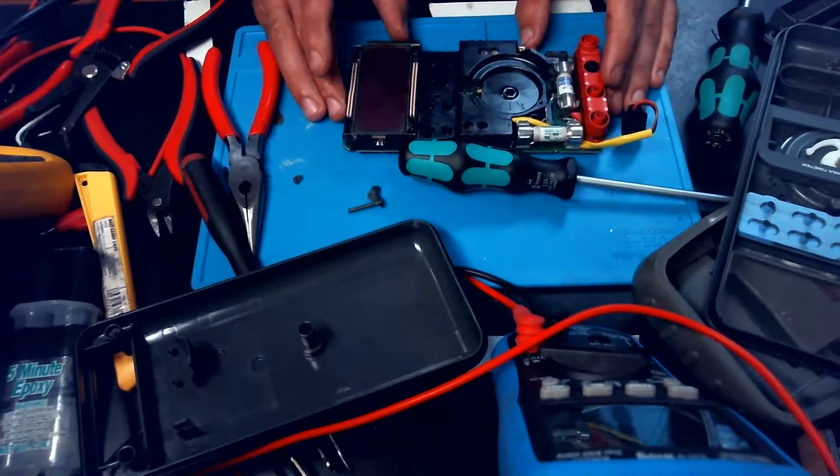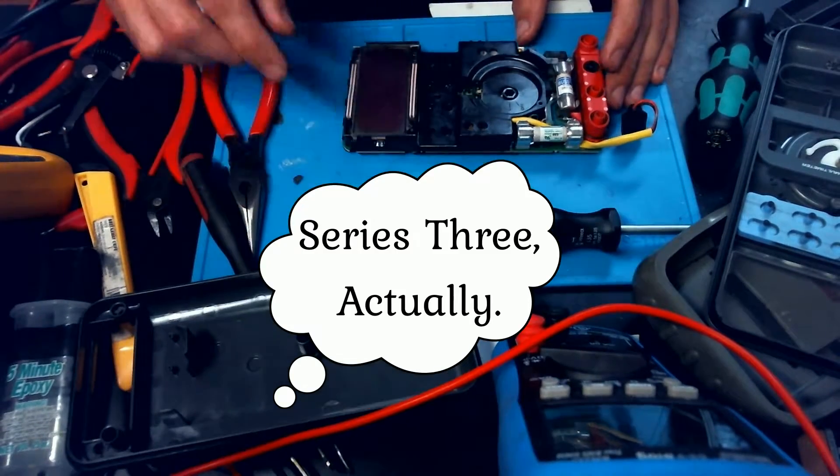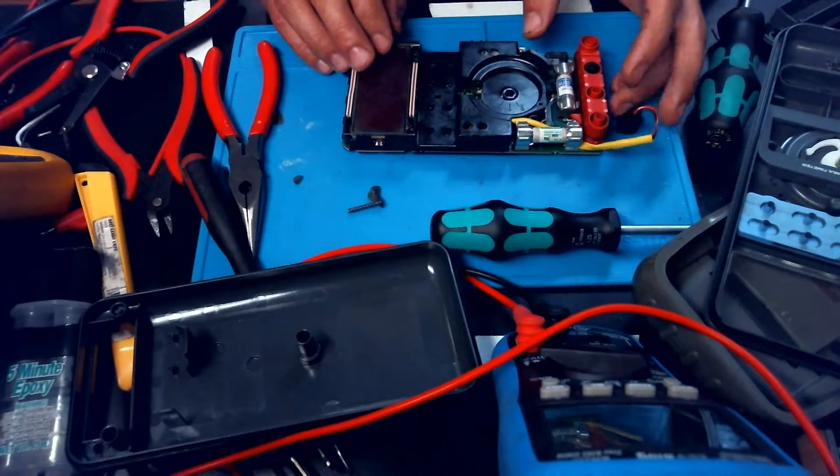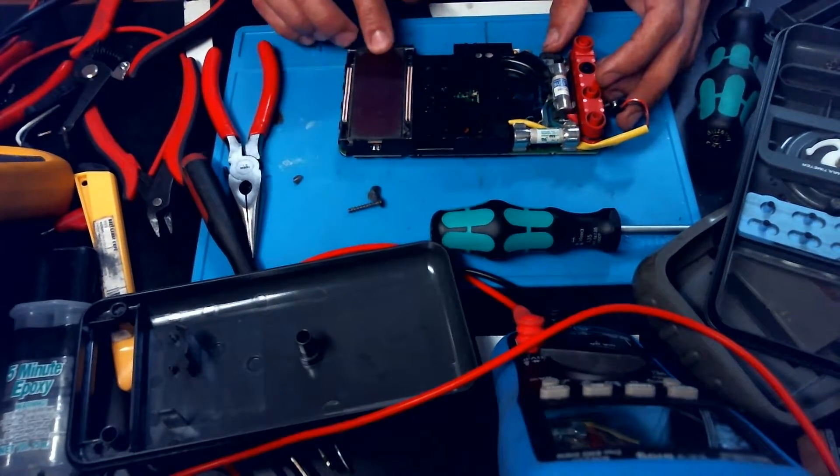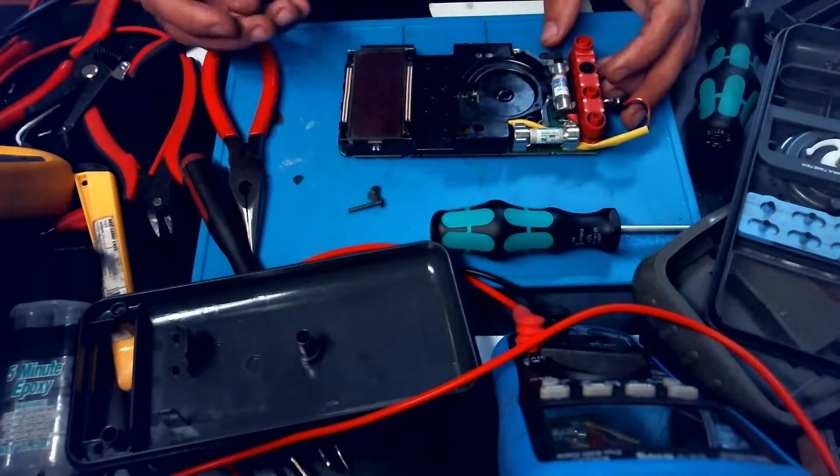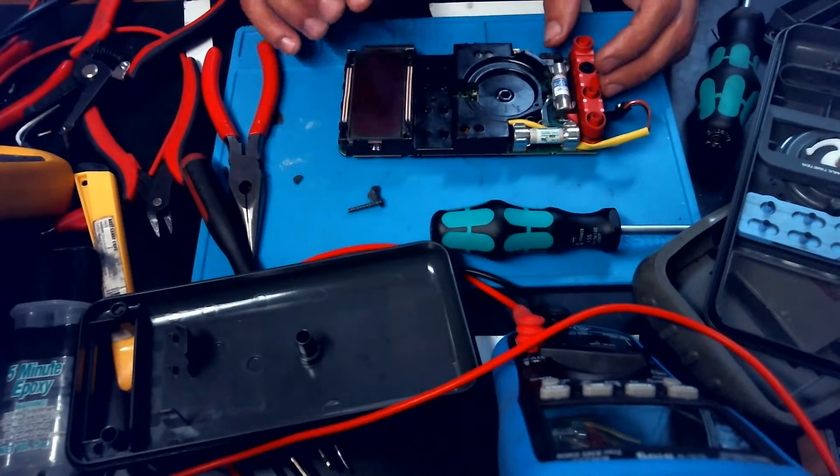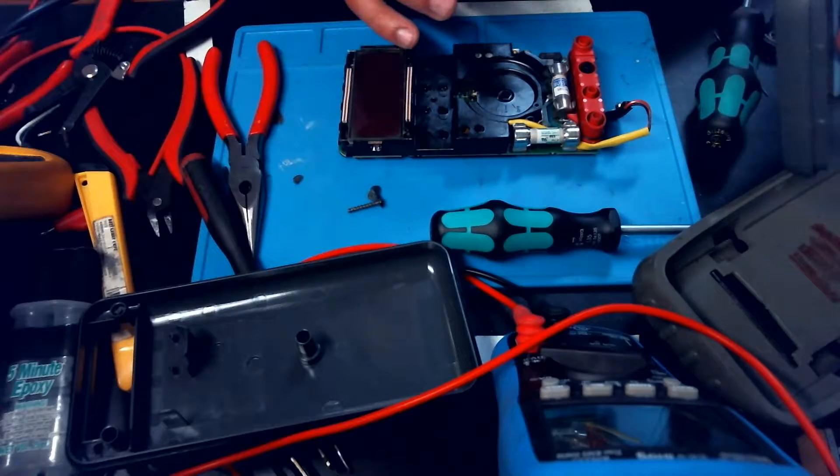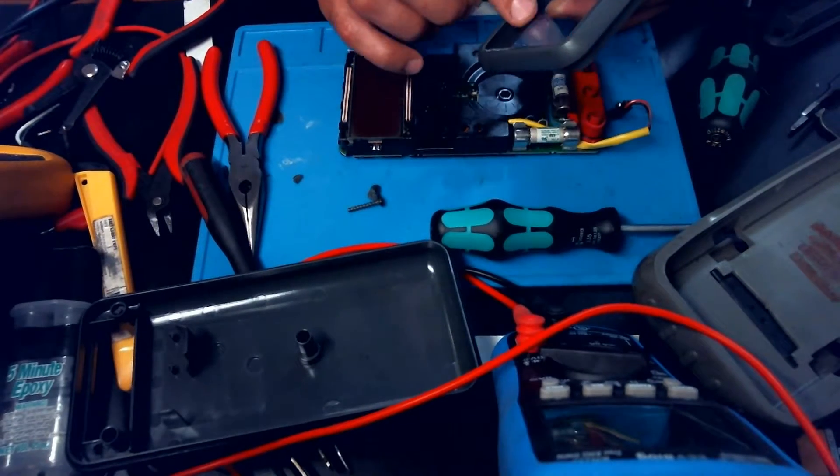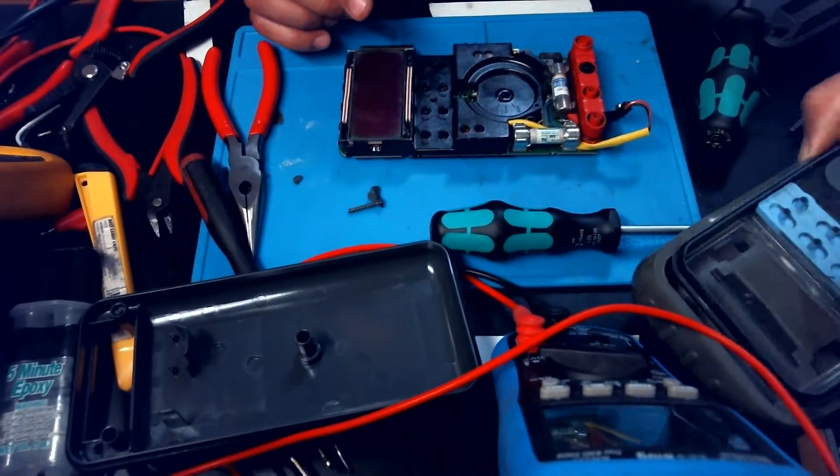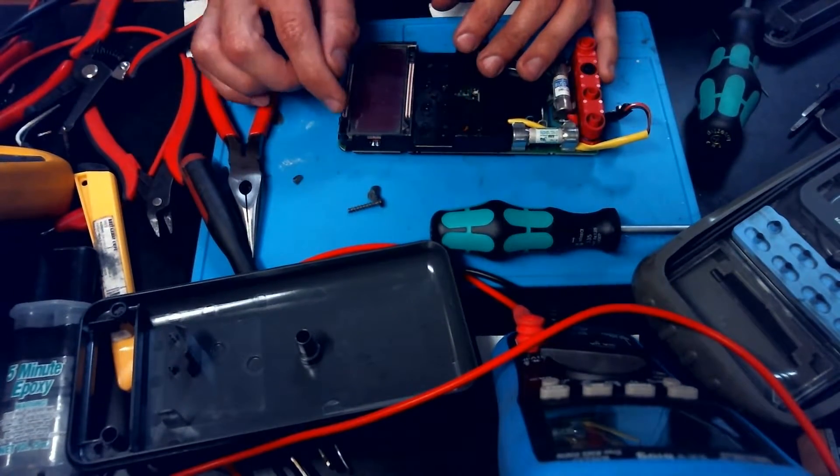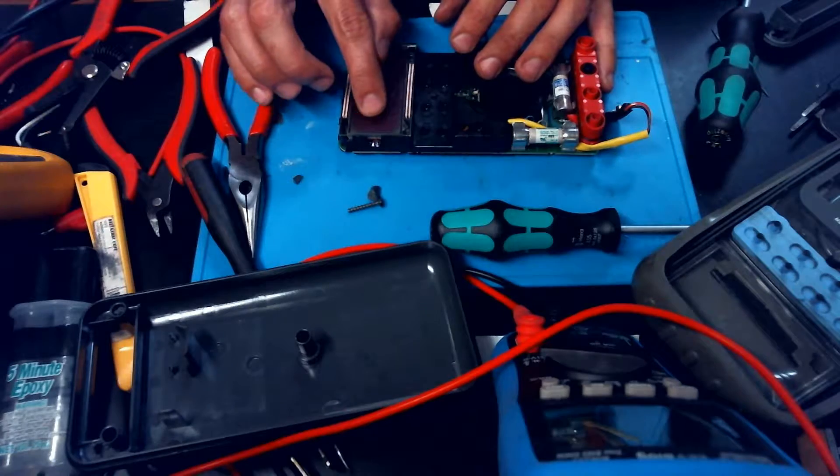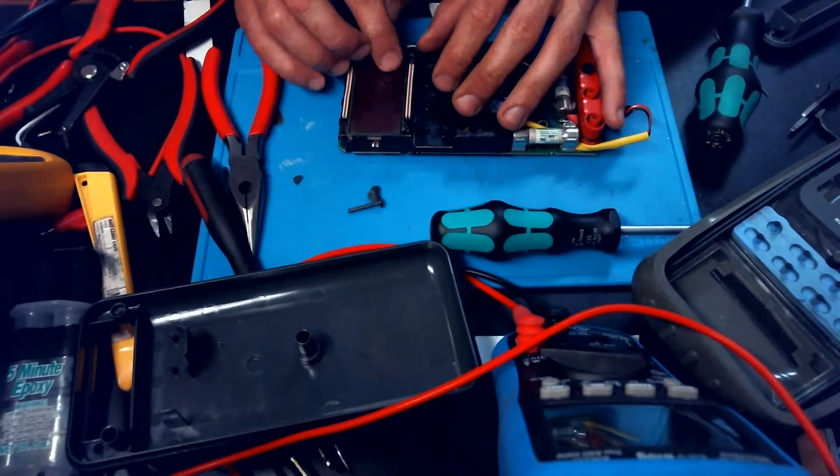Today we have a Fluke 83 series 5 on the bench. It doesn't really have any issues other than some stains on the screen. When I bought it, I actually thought they may have left the original screen protector on the clear lens, but when I got it in, it's actually the polarizing film on the screen.